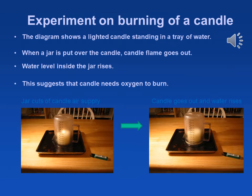To explain the involvement of oxygen in burning, I am going to demonstrate an experiment. In the experiment, a lighted candle stands in a tray of water. When a jar is put over the candle, the flame goes out and the water level inside the jar rises. This shows that when the jar cuts off the candle's air supply, the candle goes out and water rises, suggesting that the candle needs oxygen to burn.